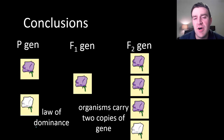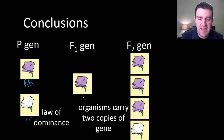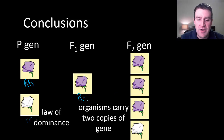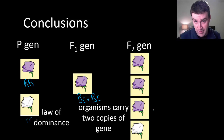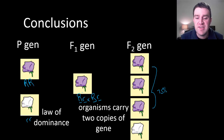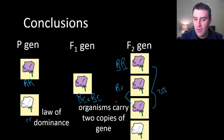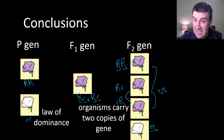His second principle is that organisms always carry two copies of a gene. Mendel could deduce this from the self-pollination results. He would only get that 75% purple ratio if the organism had two copies of the gene — expecting one fourth to get both dominant copies, two fourths to get one dominant and one recessive copy, and one fourth to get both recessive copies. You only get this result if organisms carry two copies.